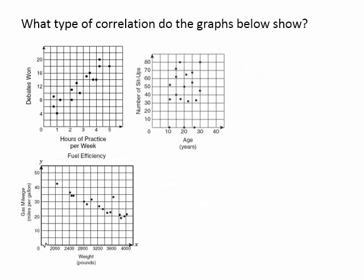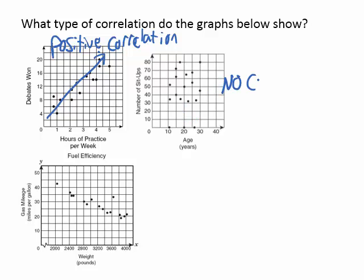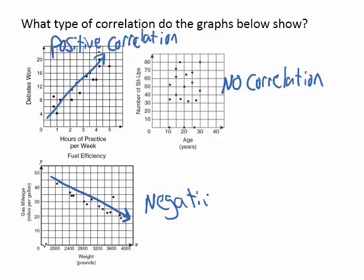Go ahead and pause the video and answer this question: what type of correlations do the graphs below show? For the first graph, you'll notice that in general, from left to right, the points are going up — so this one would have a positive correlation. The second graph has points scattered all over the place; they don't really go up or go down, so no correlation. And the third graph, the points are grouped together generally going down from left to right, so this one would have a negative correlation.